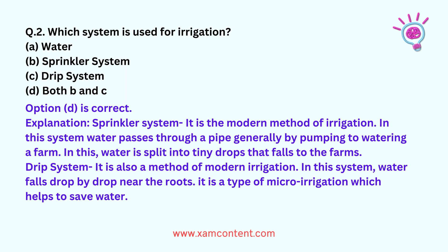Sprinkler system: It is the modern method of irrigation. In this system, water passes through a pipe generally by pumping to water a farm. In this, water is split into tiny drops that fall to the farms. Drip system: It is also a method of modern irrigation. In this system, water falls drop by drop near the roots. It is a type of microirrigation which helps to save water.